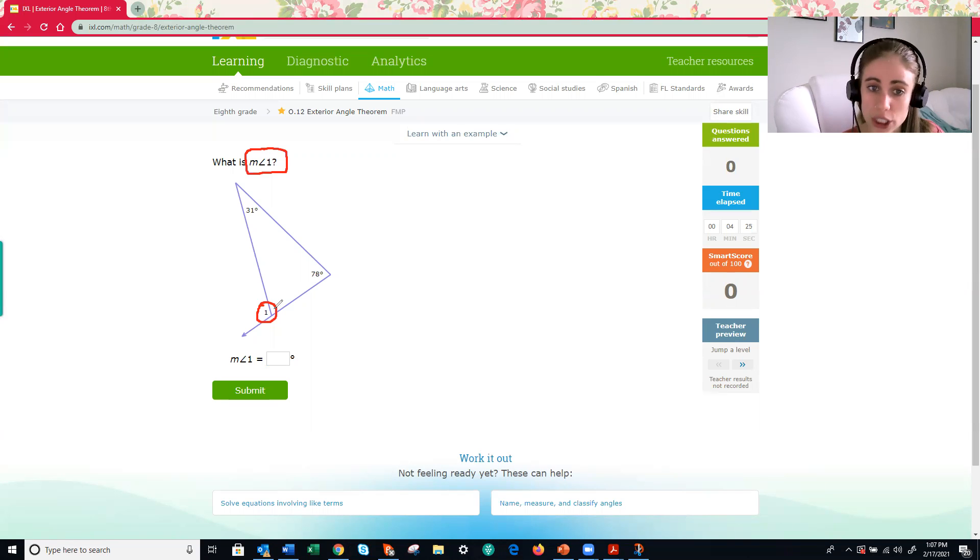So we just learned that the exterior angle, which in this case is this one right here, because notice that it's on the exterior, it's outside of my triangle. That angle is equal to the sum, so remember sum means addition, the answer to an addition problem, of my two interior angles that are across from it. So in this case 31, I'm going to add these two numbers, and 78.